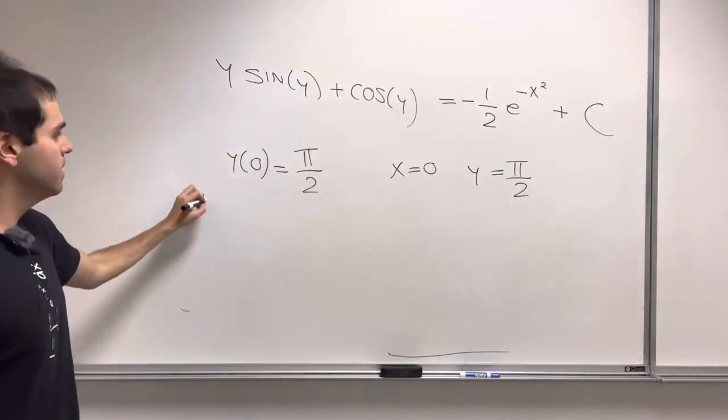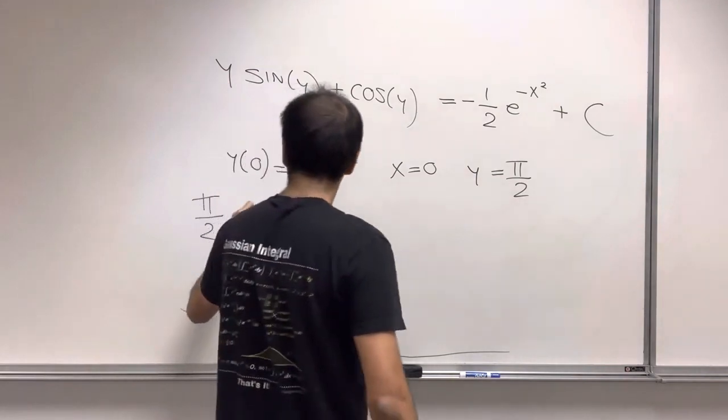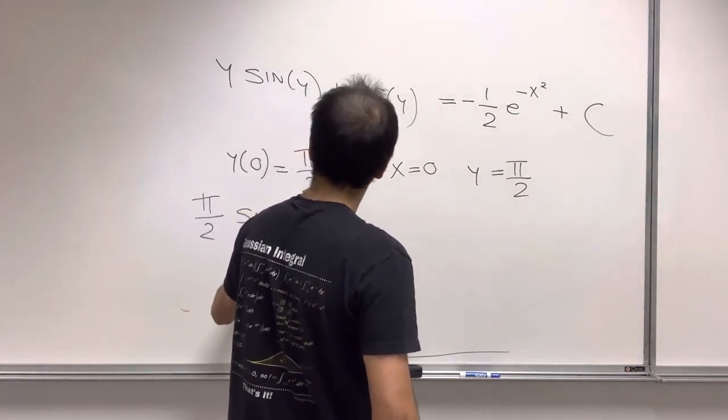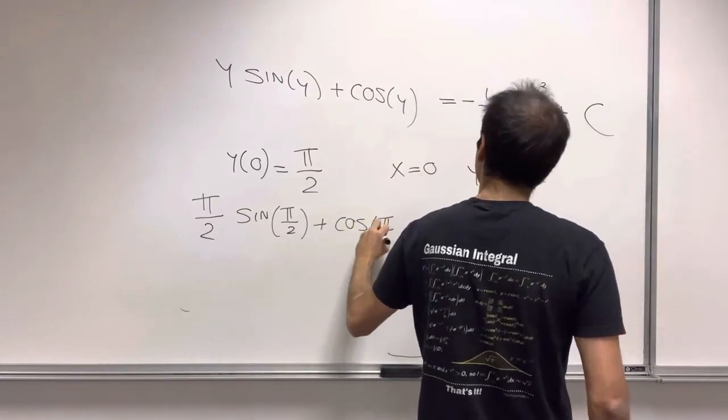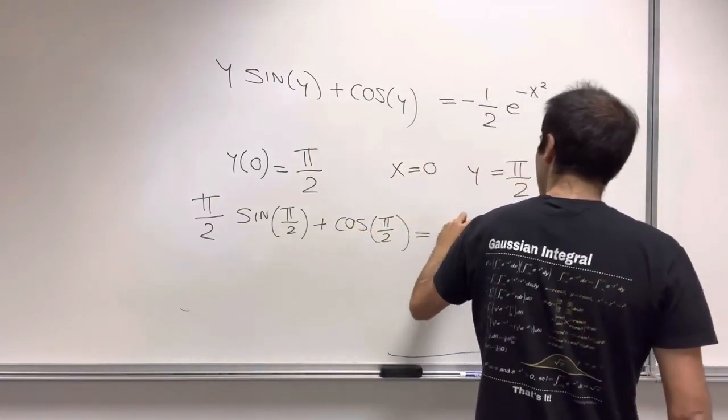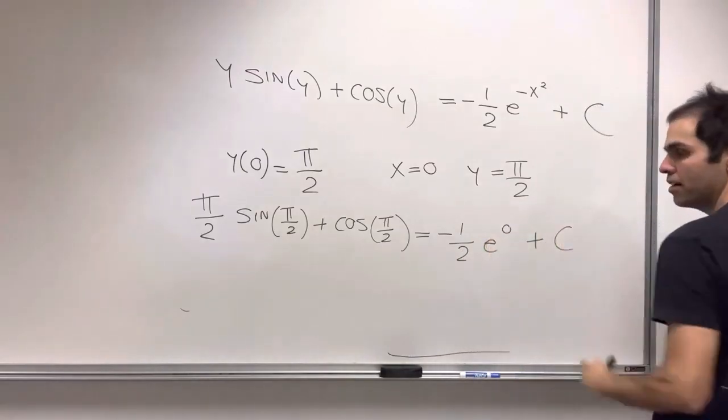So then what we get is pi over 2 sine of pi over 2 plus cosine of pi over 2 equals minus 1 half e of 0 plus a constant.